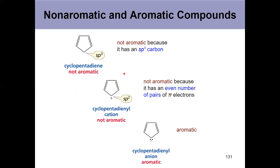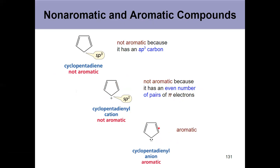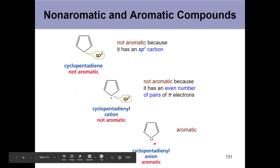But if you have a cyclopentadienyl anion, that's aromatic because it has 6 pi electrons. And the first question that should come to your mind, how do I know that these are pi electrons or can serve as pi electrons?